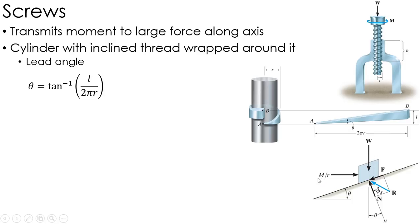I've got my weight acting down, and I have M divided by R. That's the moment up here divided by the radius that it's located at. So it's essentially the force that's trying to push it up the ramp.